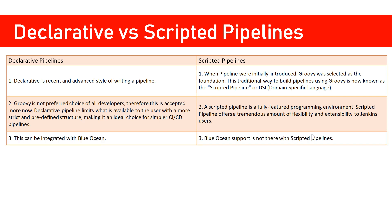Another difference is that declarative pipelines support Blue Ocean, which is a very good tool on top of Jenkins that gives you a wonderful interface. I'll be talking about that in my coming videos and showing you the entire interface. The Blue Ocean interface cannot be used with scripted pipelines.